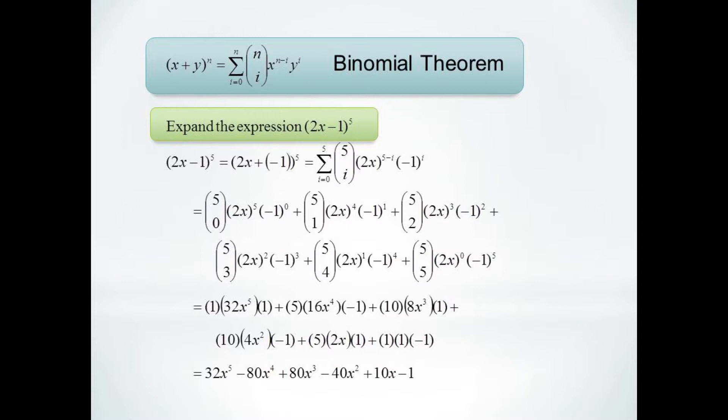So for instance, our first term will be 5 choose 0 times 2x to the 5th times negative 1 to the 0 which is 1 times 32x to the 5th times 1 which just leaves us 32x to the 5th.